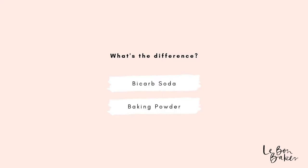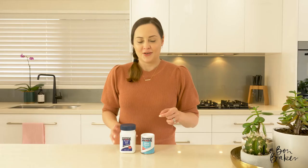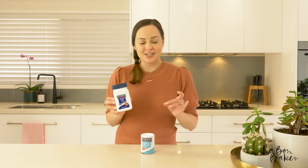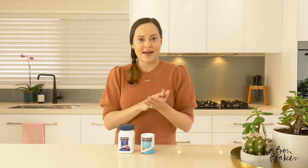Now I want to talk about the difference between baking powder and baking soda. Baking soda or bicarb soda is a pure leavening agent — a leavening agent is just something that helps to soften, rise and lighten the texture of a batter or a food. For the leavening agent in the bicarb soda to activate, it needs to be mixed with an acidic ingredient and moisture. That's how you activate baking soda.